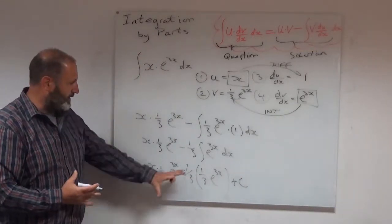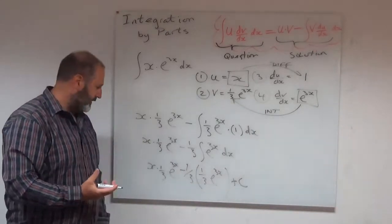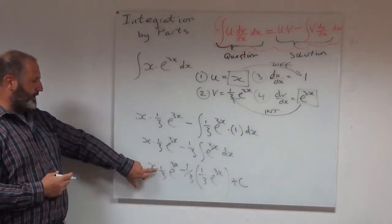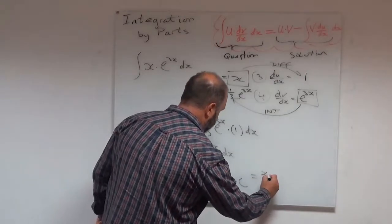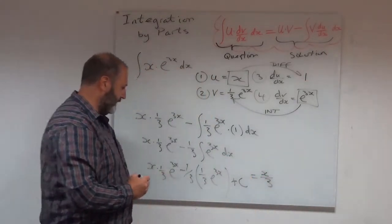And maybe just see if I could tidy it up a little bit. I mean, I've got a third times a third, for example. Could I write that a little bit neater? So all I'm going to do now is tidy this up a little bit. I think x times a third would be nicer written as x over 3 times e to the 3x.